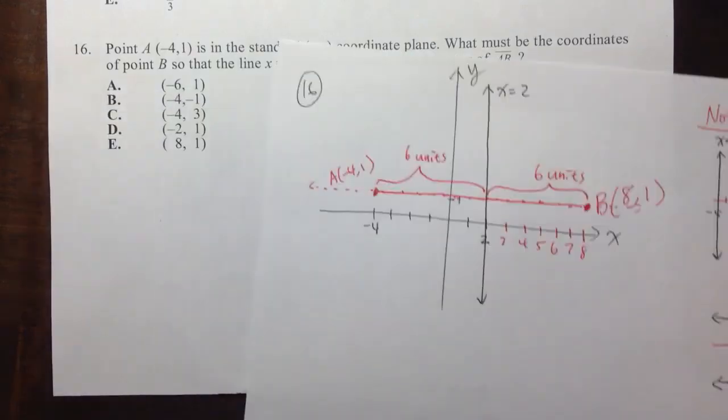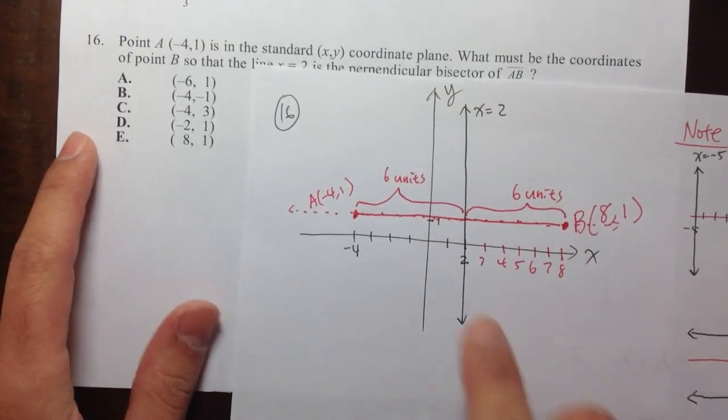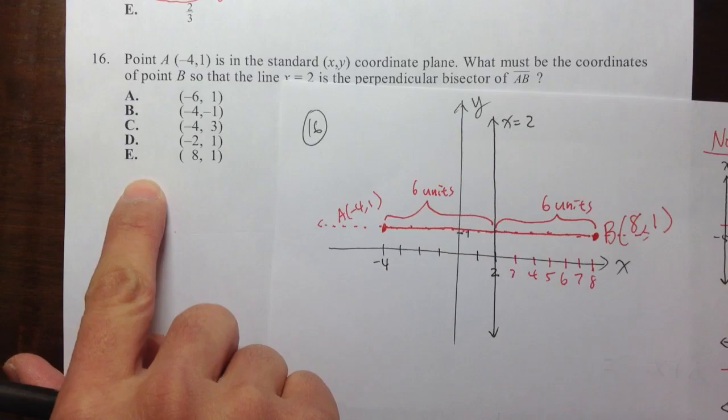Okay. So eight comma one, let me just finish this up, is choice E. Choice E.